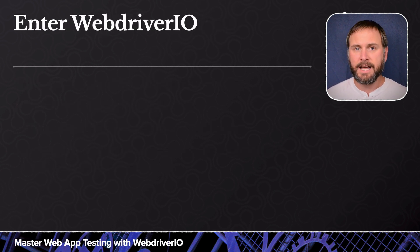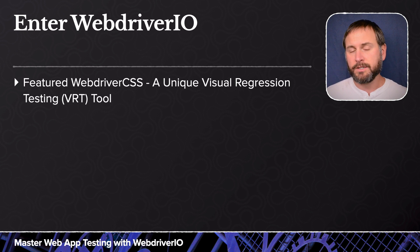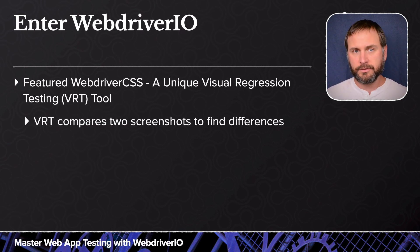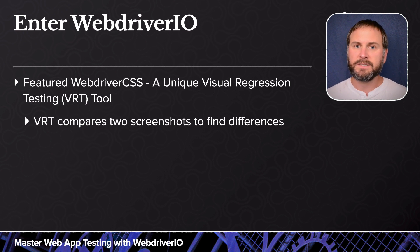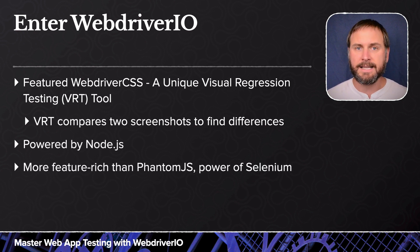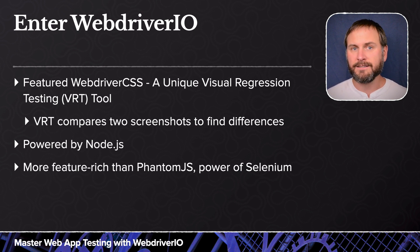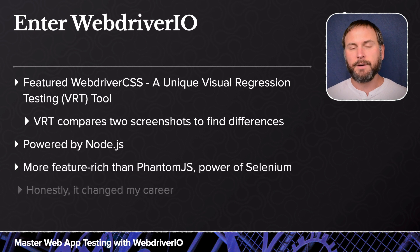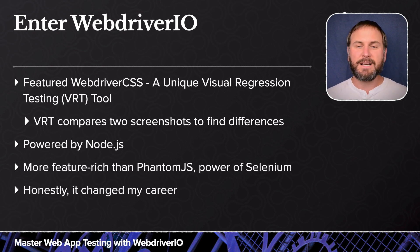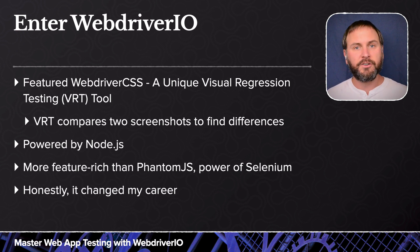In 2015, I found out about a tool called WebDriverCSS — a visual regression testing tool used to compare two screenshots of a page and see if they're visually different. WebDriverCSS was actually a plugin for a library called WebDriver.io, which came with all the great features of PhantomJS but had the added benefit of supporting Selenium. WebDriver.io made Selenium approachable to me, and that was literally life-changing. Since investing myself in WebDriver.io, my job duties have shifted from primarily front-end development to a focus on front-end testing.